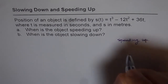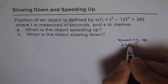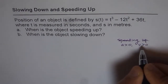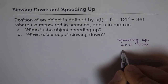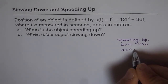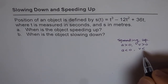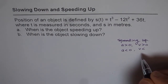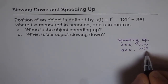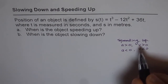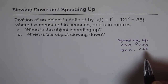We say speeding up when both acceleration and velocity are greater than zero — both are positive — or the other condition is when both are negative. Imagine traveling south where south is considered a negative direction. Velocity magnitude increasing means more negative, and acceleration increasing also means more negative. So either both are more negative or both are positive — then we are speeding up.